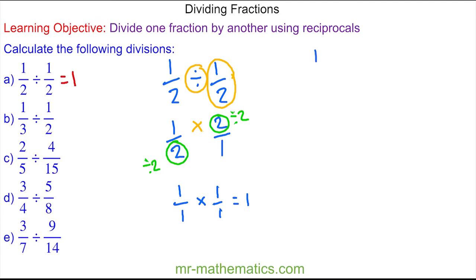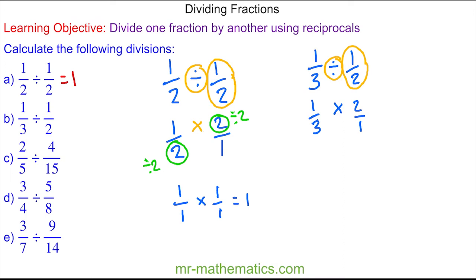For question b, we have one third divided by one half. Again, we change the division to multiplication and flip this fraction upside down, finding its reciprocal. So we have one third multiplied by two over one. In this question we cannot cross simplify, so we multiply the numerators: one times two gives two, and the denominators: three times one gives three, so we have two thirds.